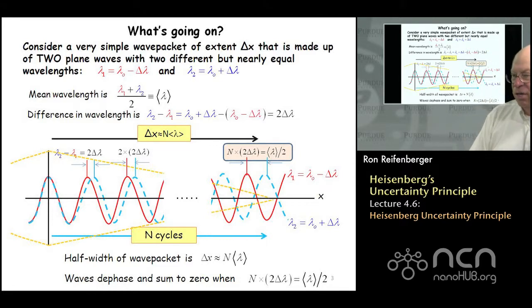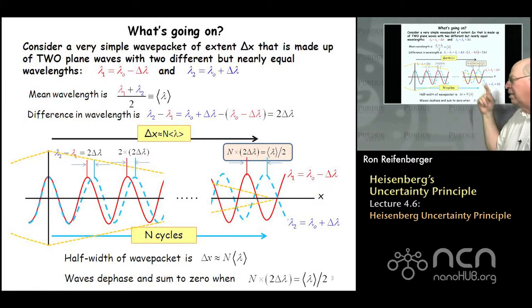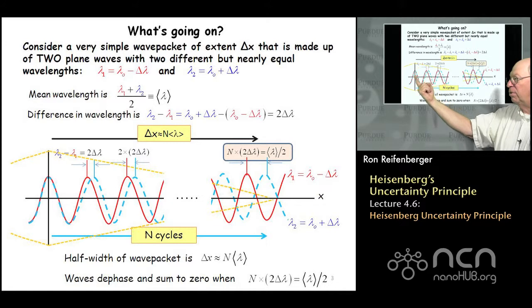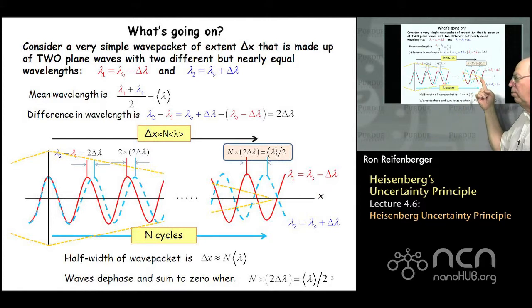Something very interesting happens when this shift equals the average wavelength divided by 2. When that condition is met, the red and blue waves are exactly 180 degrees out of phase, and adding them gives precisely zero. When they're in phase, adding them gives twice the amplitude. So there's an envelope function — I sketch it schematically with an orange line — which describes how the amplitude goes to zero as the two waves systematically dephase with respect to each other.